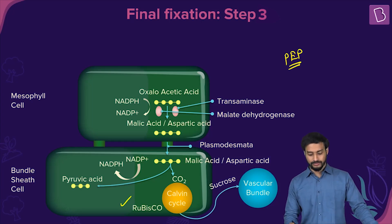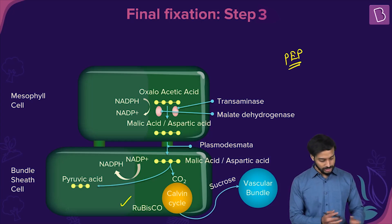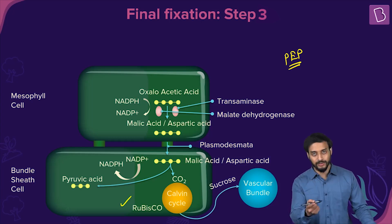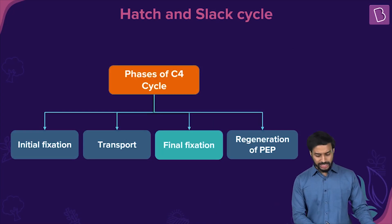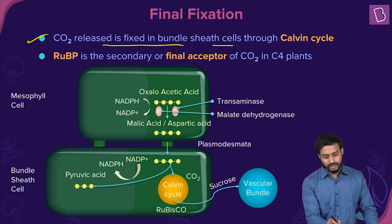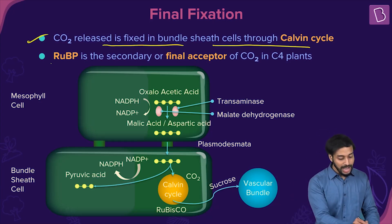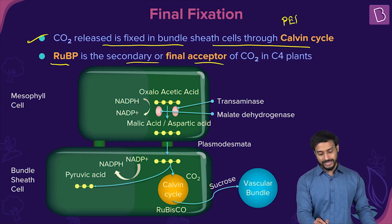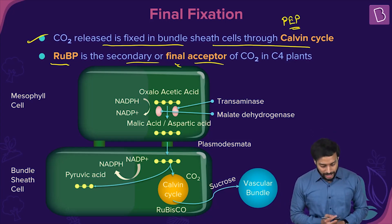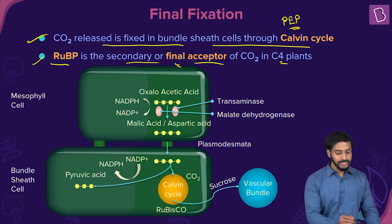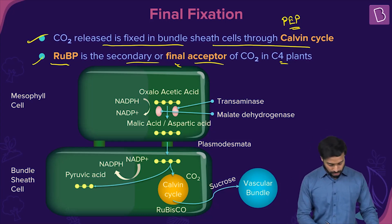So to summarize the acceptors: the initial or primary acceptor of carbon dioxide is PEP, and the final or secondary acceptor is RuBP — ribulose bisphosphate — in the Calvin cycle within the bundle sheath cells. This distinction is commonly asked in exams.